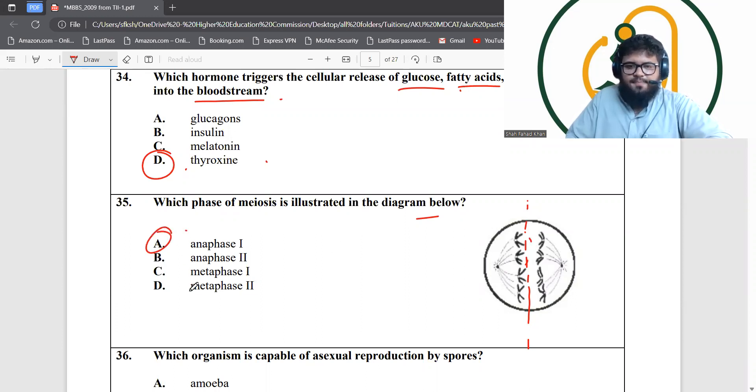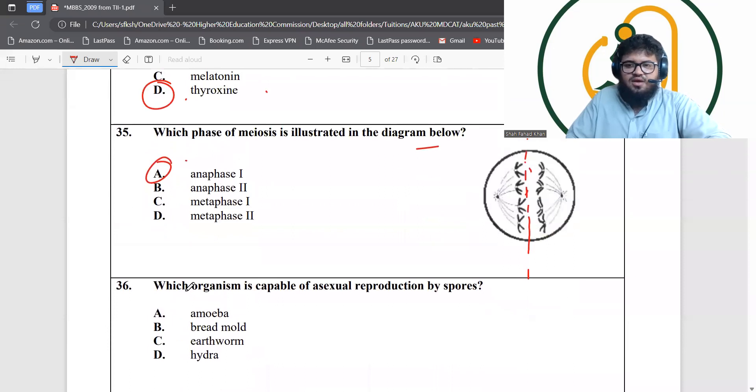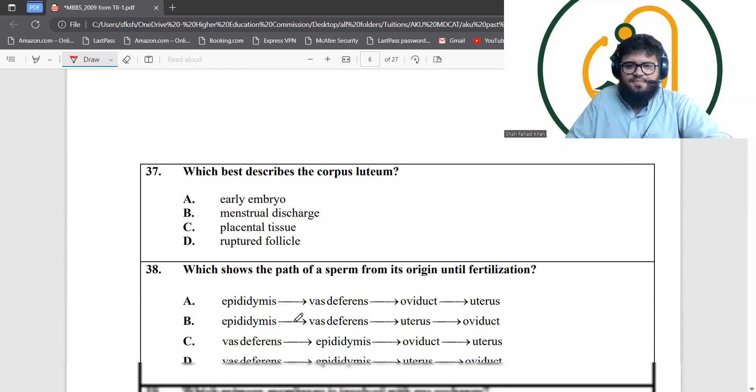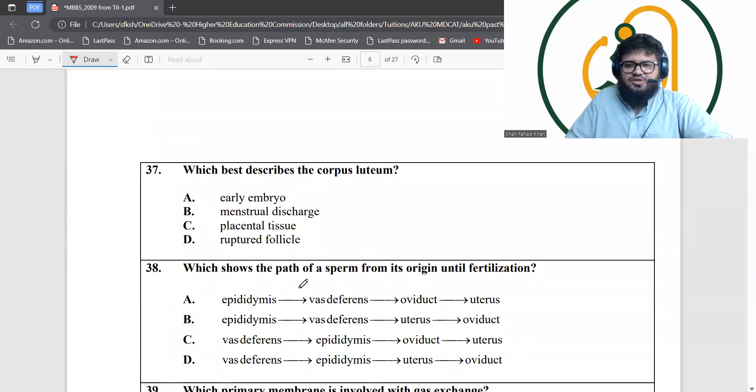Which organism is capable of sexual reproduction by spores? Spores are present in fungi and bread mold is an example of fungi.